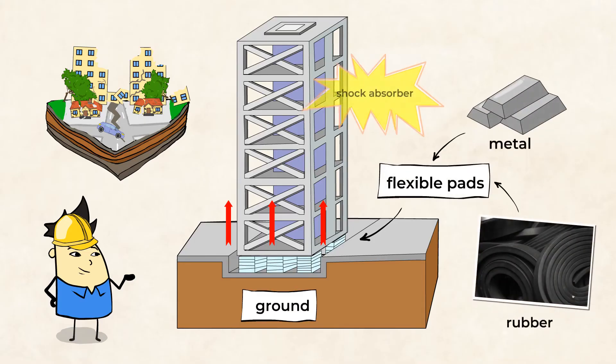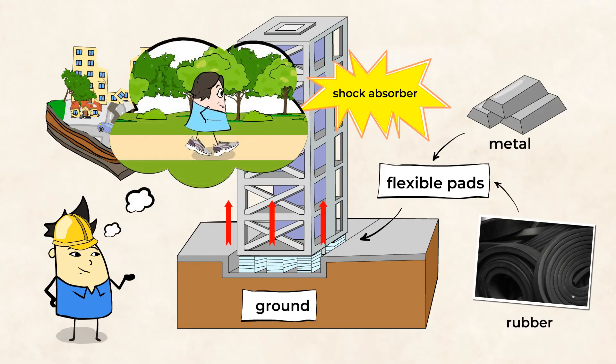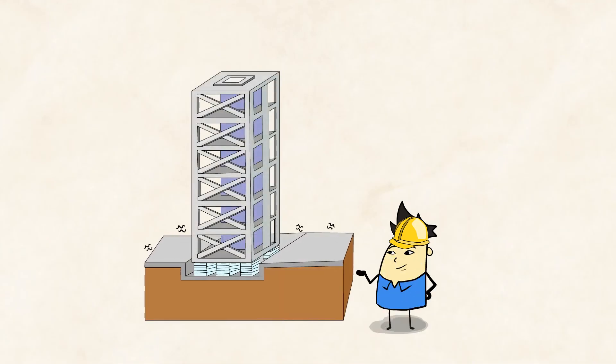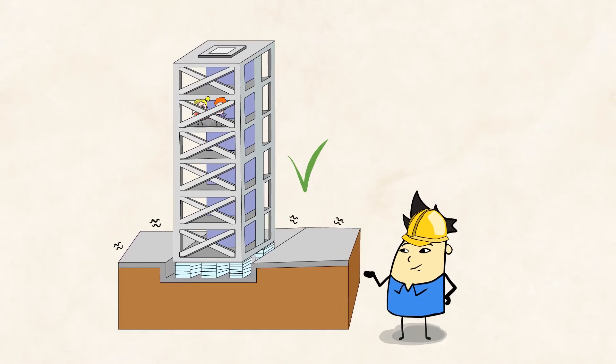This serves as a shock absorber, similar to how sneakers absorb the impact of our foot hitting the ground when we run. When an earthquake hits, only the base of the building moves, helping the building stay steady. Allowing the base of the building to move helps to keep the building from collapsing. This means that the people inside the building can be protected from the effects of the earthquake.